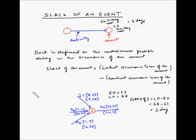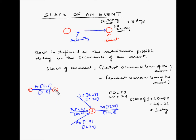Let us take another example. Suppose there are two events with only one activity between them. Activity A takes 5 days to complete. The earliest start is 0 and the earliest finish is 5. The latest start is 3 and the latest finish is 8. So the slack of event 2 equals the latest occurrence minus the earliest occurrence, which is 8 minus 5, giving a slack of 3.